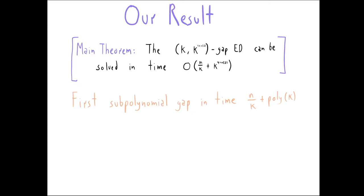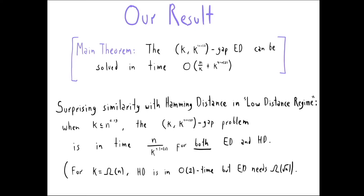We give an algorithm which solves the k vs. k^(1+o(1)) gap edit distance problem in time n/k + polynomial in k, where the dependence on k is k^(4+o(1)). This is the first algorithm giving a sub-polynomial gap in that time budget. Moreover, our result shows a surprising similarity between Hamming distance and edit distance in the so-called low distance regime: when k is small enough that the n/k term dominates the polynomial in k, this gap problem for both edit distance and Hamming distance is solvable in roughly time n/k, up to a k^(o(1)) factor.